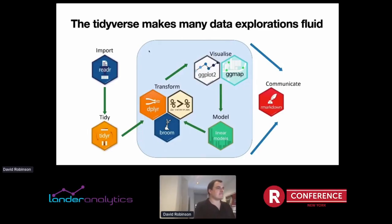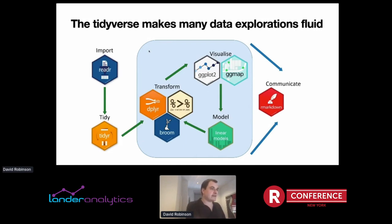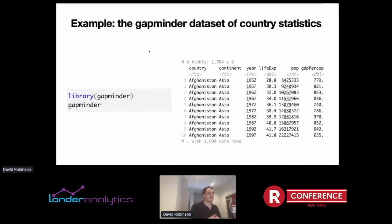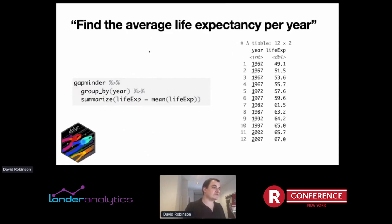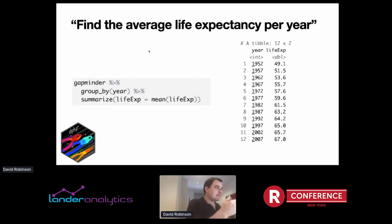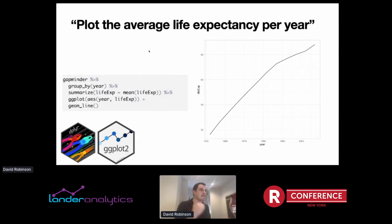The Tidyverse — I really love it. It makes a lot of data exploration very fluid. Take an example from one of my favorite simple data sets, the Gapminder data set of country statistics, where each row is one observation of one country in one year. The Tidyverse offers a lot of tools for working with a data set like that. I could group by year and find the average life expectancy — that would be two steps within the dplyr flow.